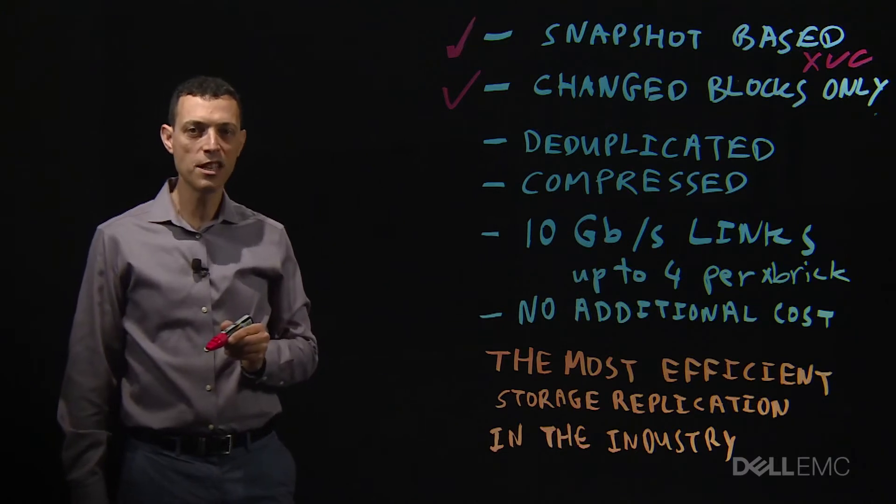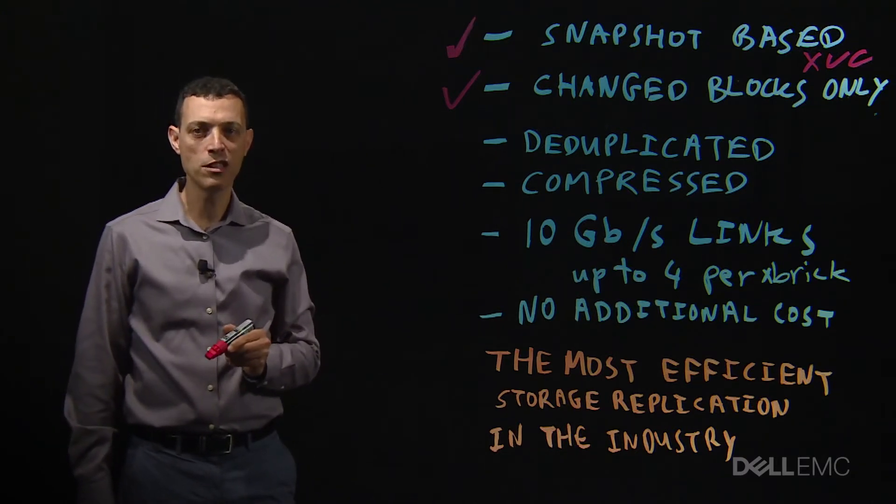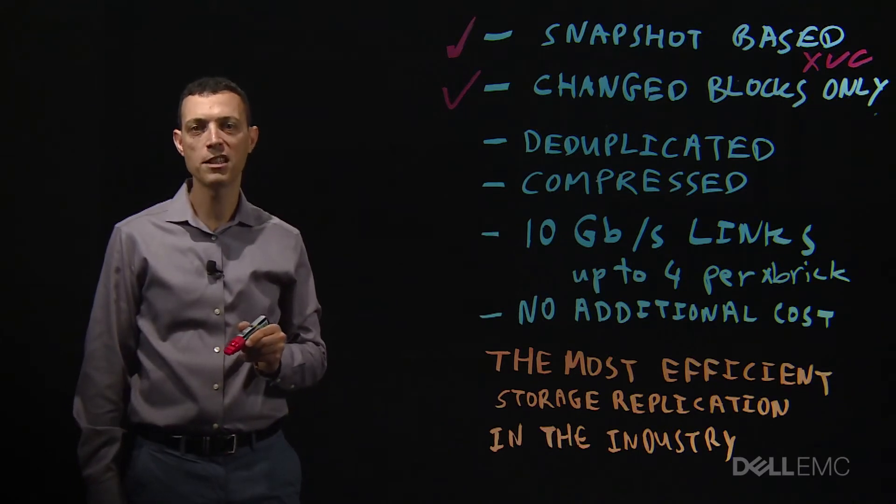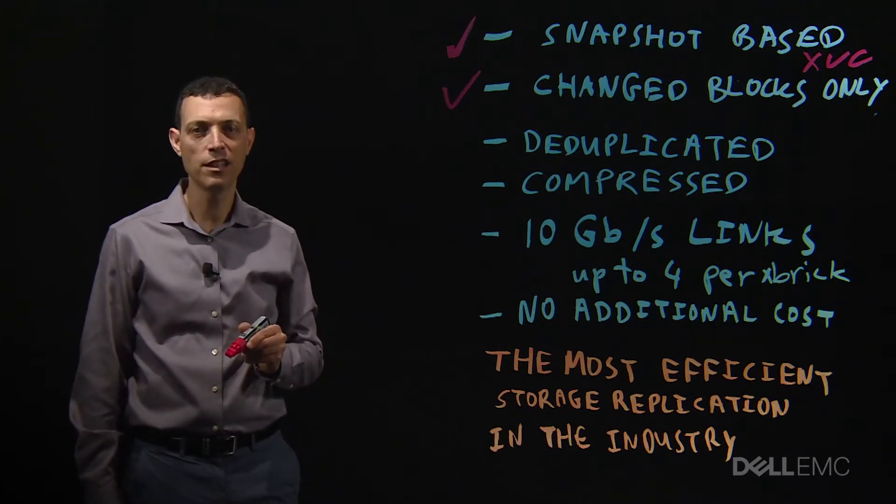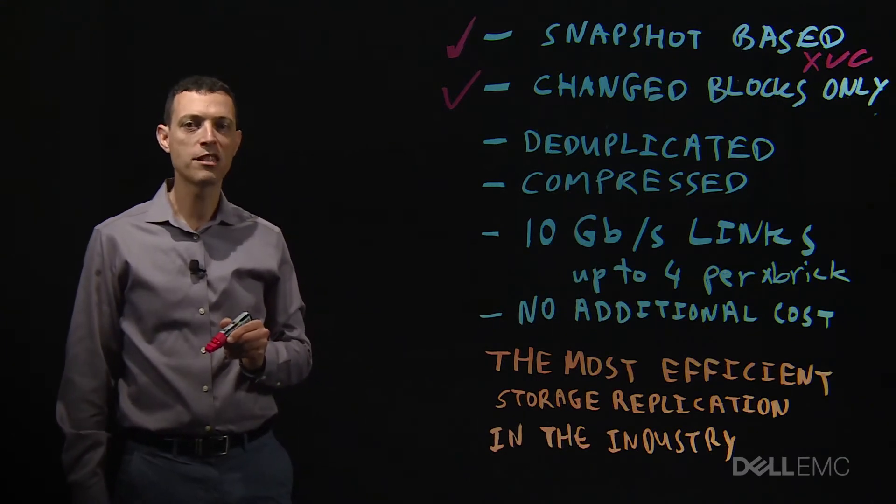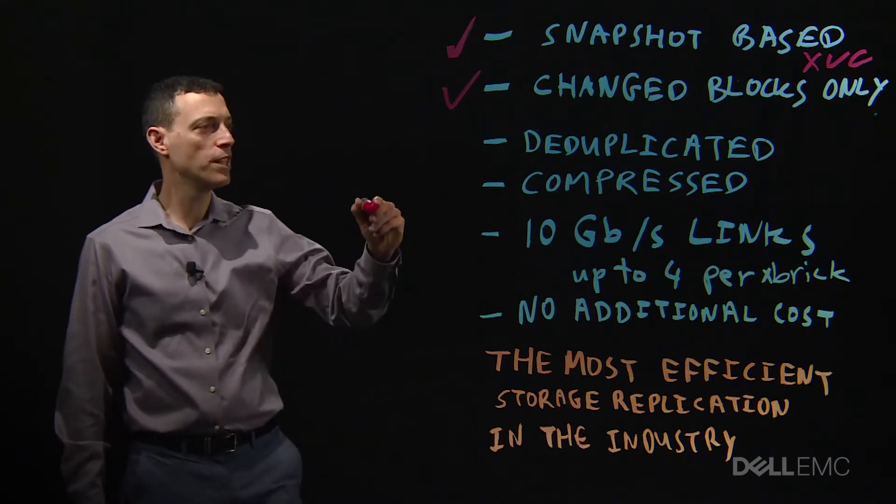The data we send is deduplicated. Replication is globally dedupe-aware, so that if a block of data already exists anywhere at the target, it does not need to be replicated over the link. We'll just send the hash instead of the entire block.